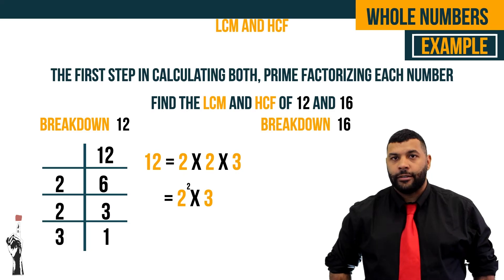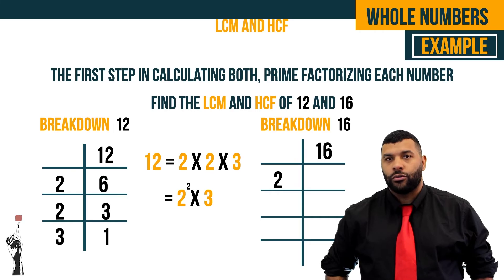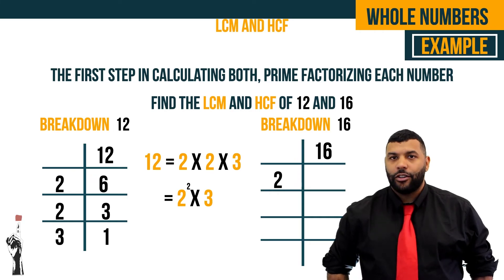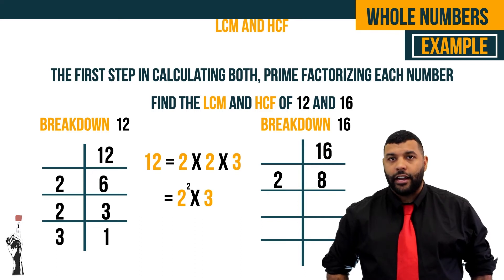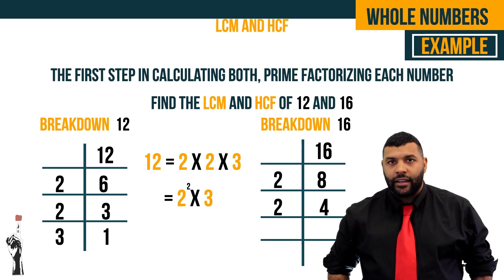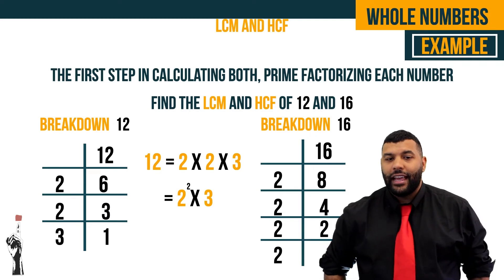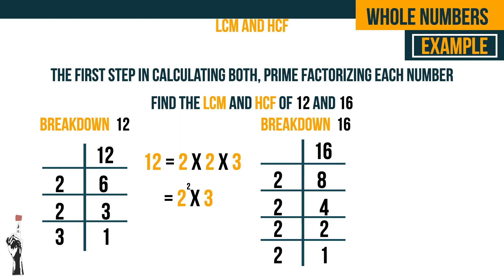Next we do the same thing for 16. We place 16 in a ladder and divide it by the smallest prime number, 2. 16 divided by 2 gives us 8. 8 divided by 2 is 4. 4 divided by 2 gives us 2. And 2 divided by 2 gives us 1. So 16 is equal to 2 times 2 times 2 times 2, or 2 to the power of 4.